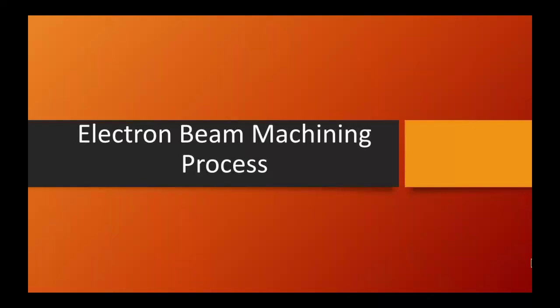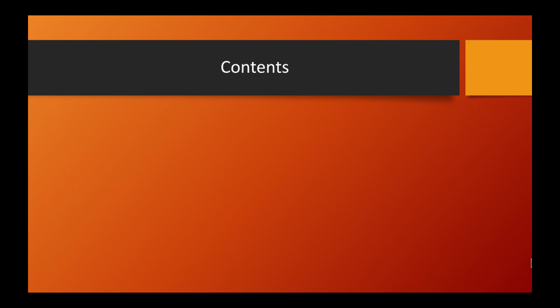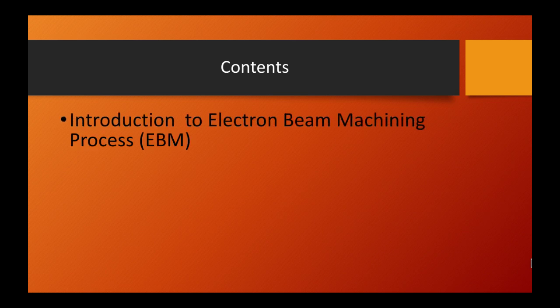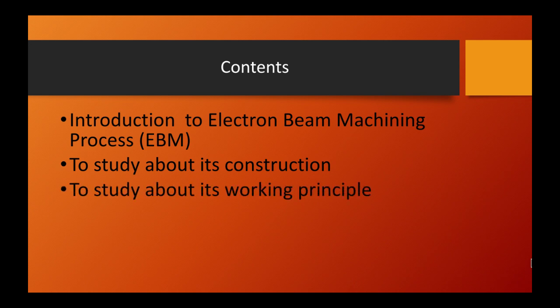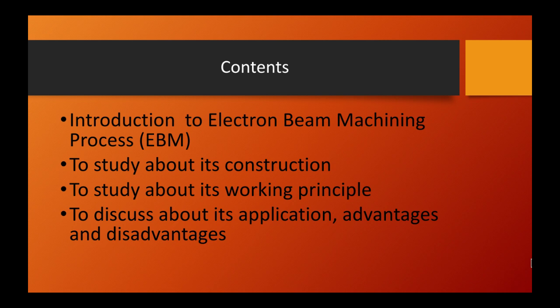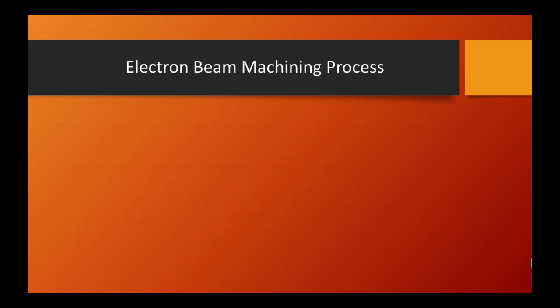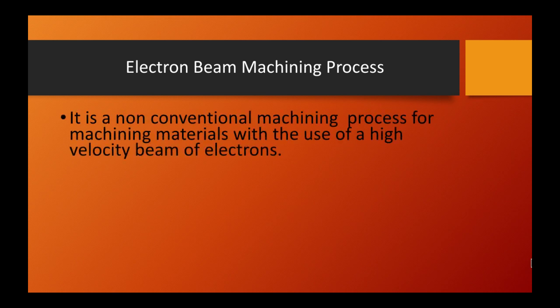Today on this channel we shall discuss the electron beam machining process. We will cover an introduction to the process, its construction, working principle, and applications, advantages, and disadvantages. Electron beam machining is a non-conventional machining process for machining materials using a high-velocity beam of electrons.